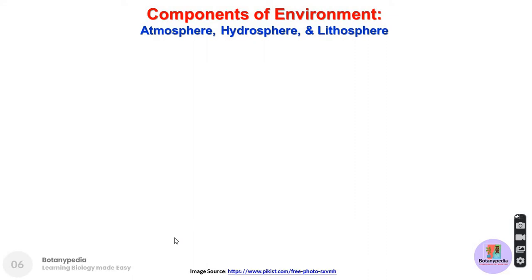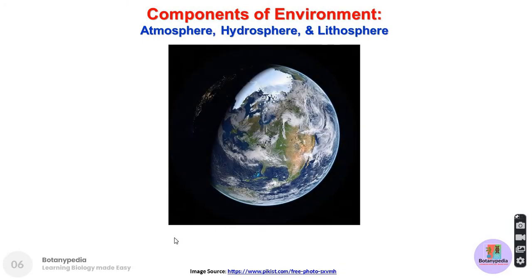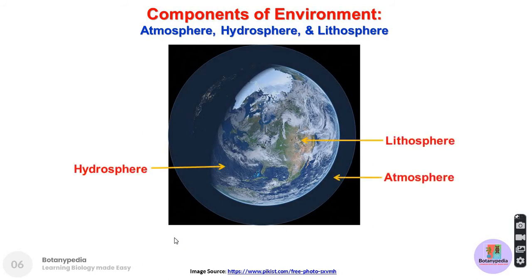There are other ways of defining the abiotic and biotic components of an environment. Three terms are used: atmosphere, hydrosphere, and lithosphere. Looking at a picture of the Earth, you can see these three components. Atmosphere is the blanket of air surrounding the Earth globe. The land forming the continents represents the lithosphere, and approximately 70% of the Earth's surface is water, known as the hydrosphere. The detailed aspects of each will be discussed next.